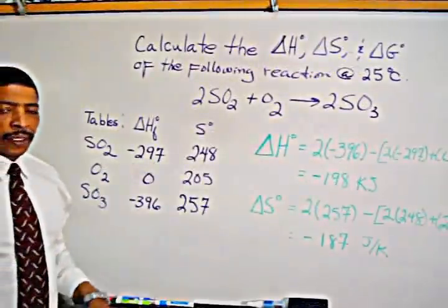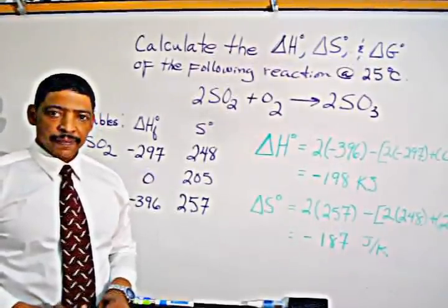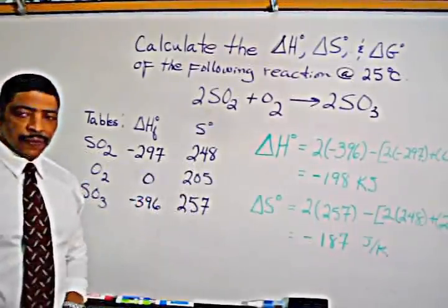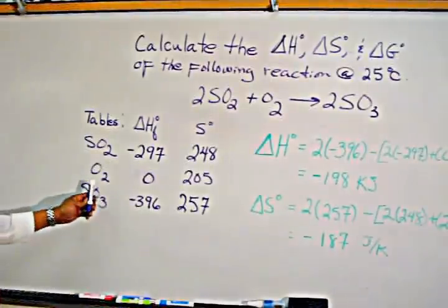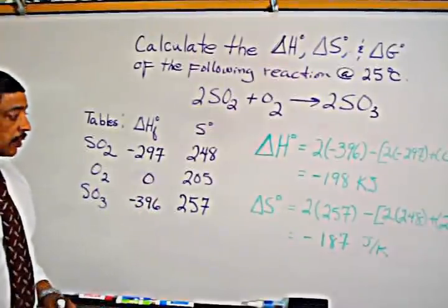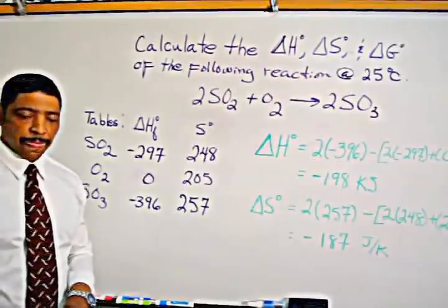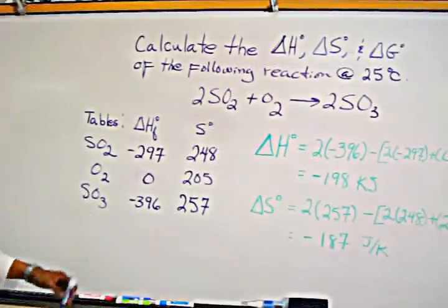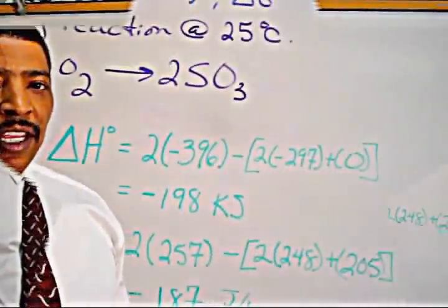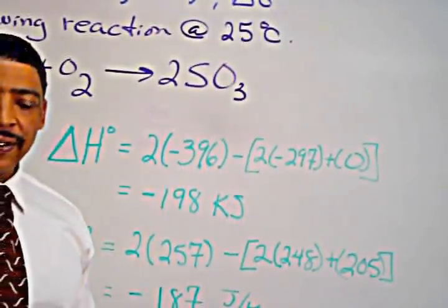The units for entropy are given in joules per mole times K. The entropy value for sulfur dioxide is 248. The value for oxygen gas is not zero in this case — the value for oxygen gas is actually 205. The entropy value for sulfur trioxide is listed at 257. Now it is possible to calculate the delta H and delta S of the reaction.